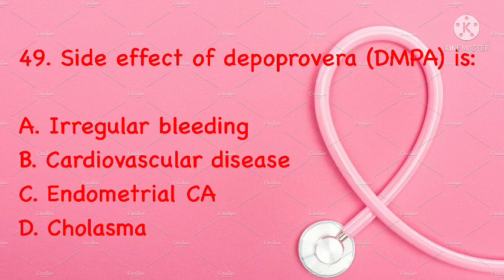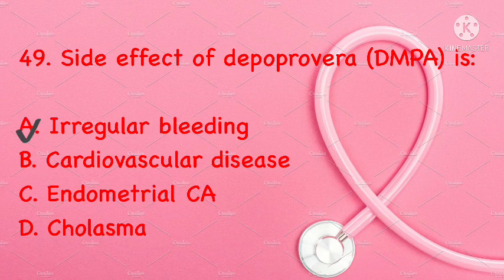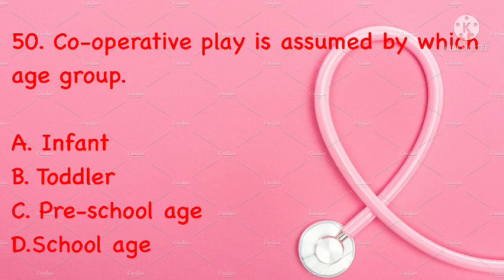A side effect of Depo-Provera is: irregular bleeding, cardiovascular disease, endometrial cancer, or chloasma. Correct answer is A: irregular bleeding.